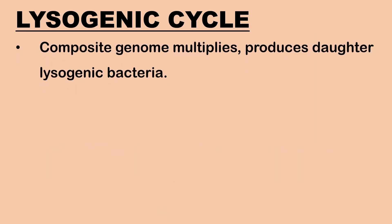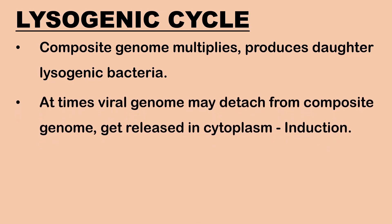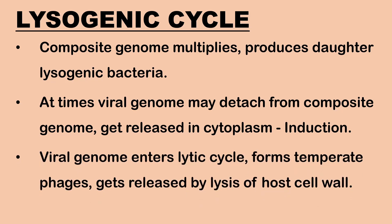The prophage genome replicates along with the host genome. This cycle is seen in lambda phages that attack Escherichia coli. The phage involved is a temperate phage. The new composite genome replicates as a single unit and multiplies several times to produce daughter lysogenic bacteria. If a bacterium with prophage is exposed to different factors like temperature fluctuations, UV light, or chemicals, the viral genome may detach from the composite genome and get released in the cytoplasm. This dissociation is termed induction. The viral genome then enters the lytic cycle and forms temperate phages that are released from the host bacterium by lysis of the host cell wall.